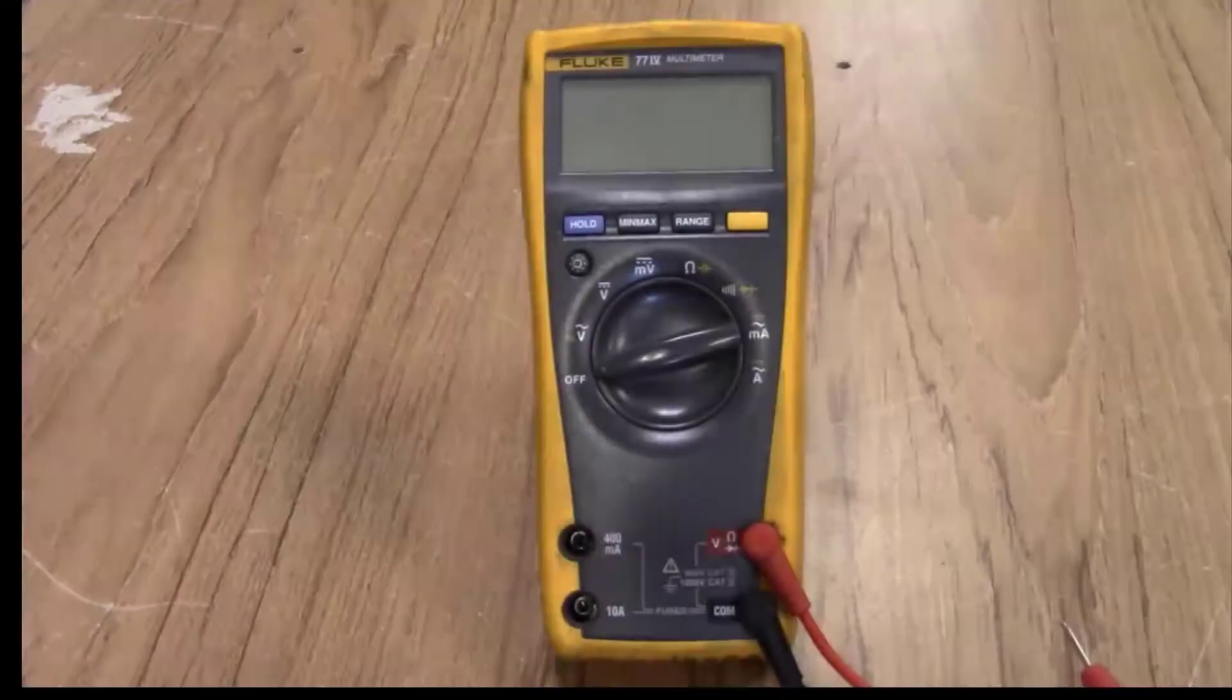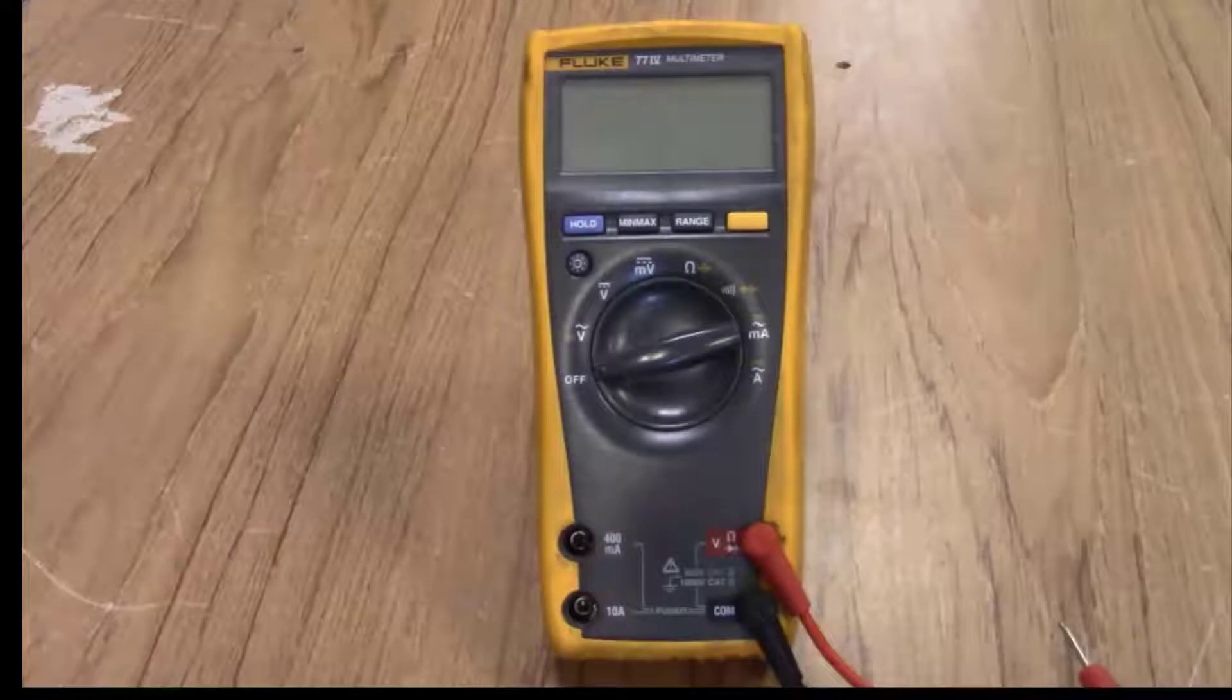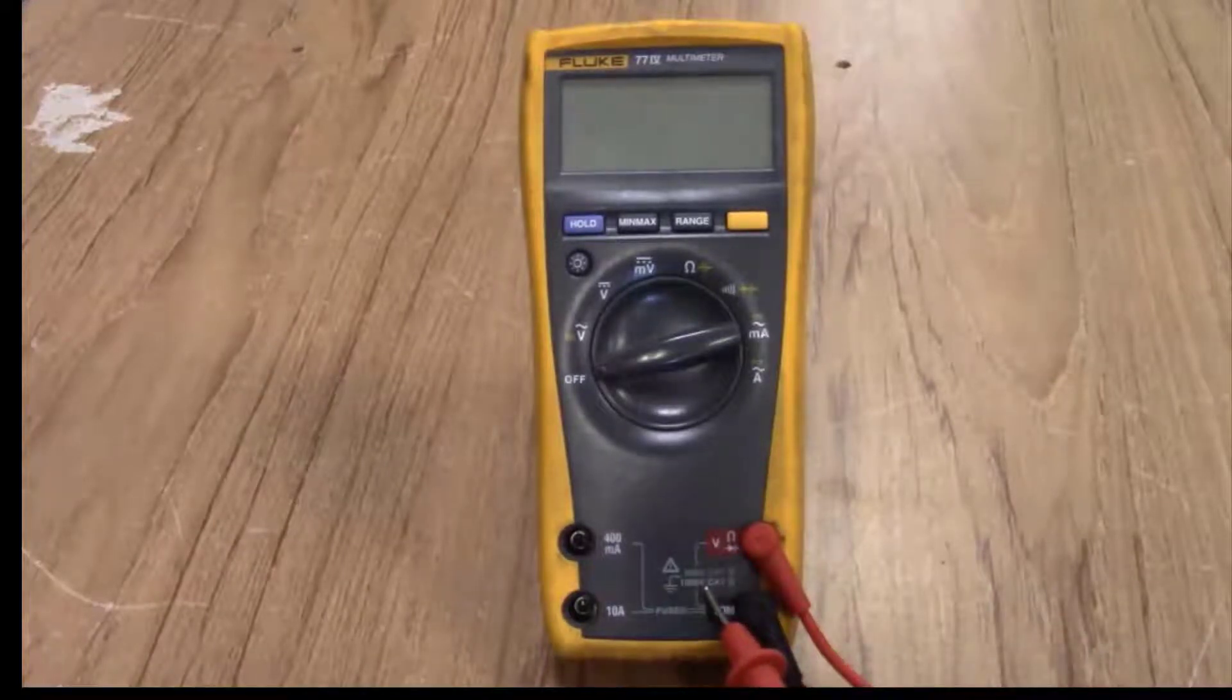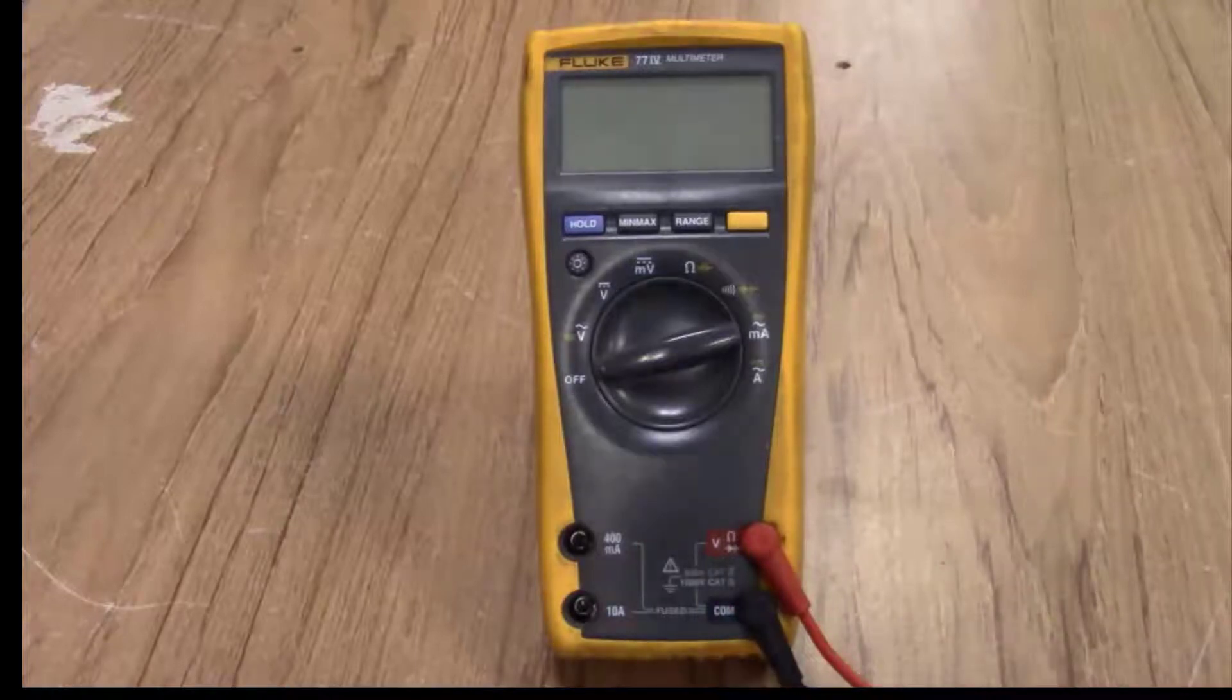First, we'll talk about the Fluke auto range style meter. Just a quick overview of some of the things on it. You have to pay attention to your category listing to make sure you're using the appropriate protection for the application you're using.